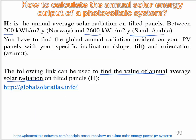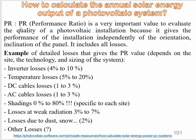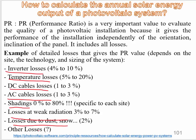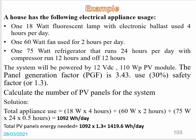From this diagram we can determine H, the annual average solar radiation. The next factor is PR, the performance ratio, which depends on losses. We have many types of losses: inverter losses, temperature losses, DC cable losses, AC cable losses, shading losses, losses at weak radiation due to dust or snow, and other losses. The most significant loss is shading.